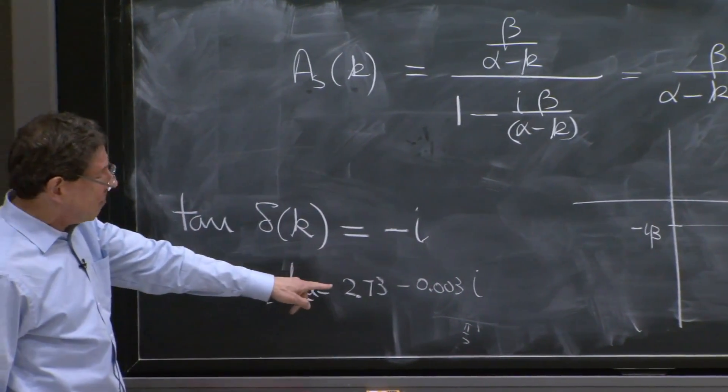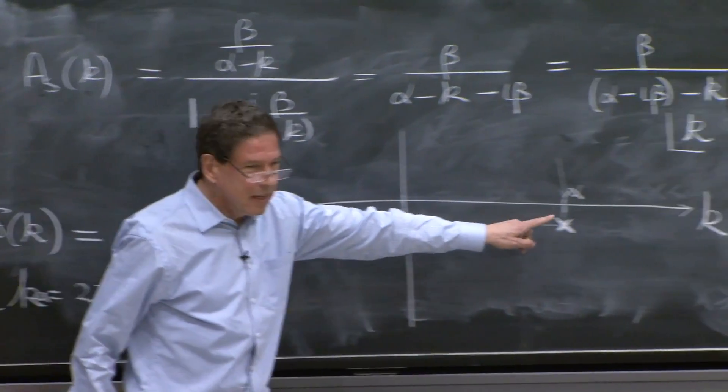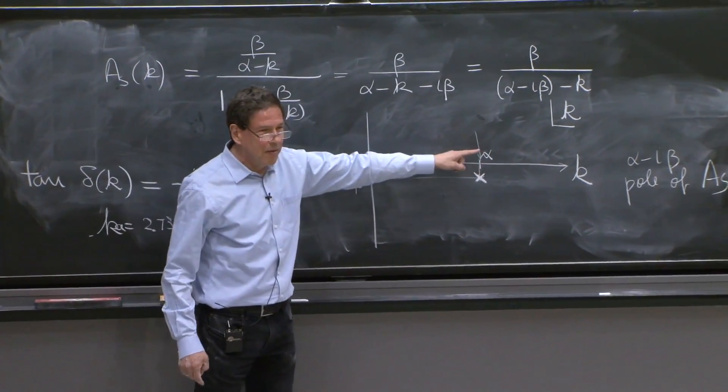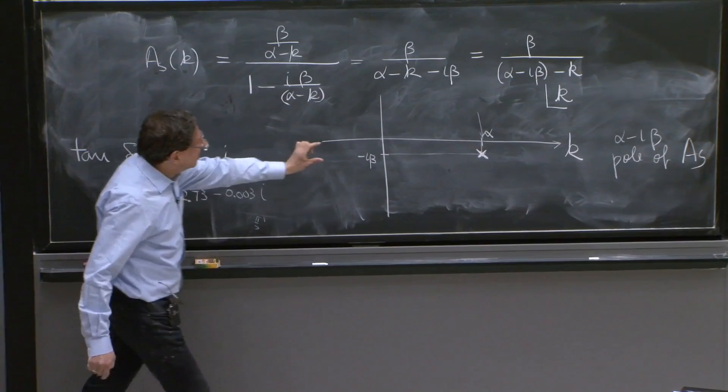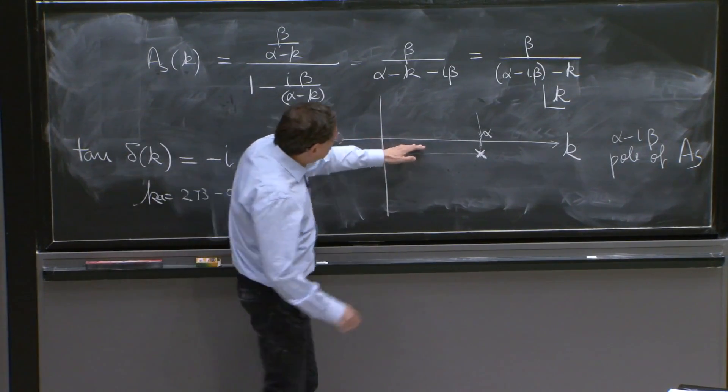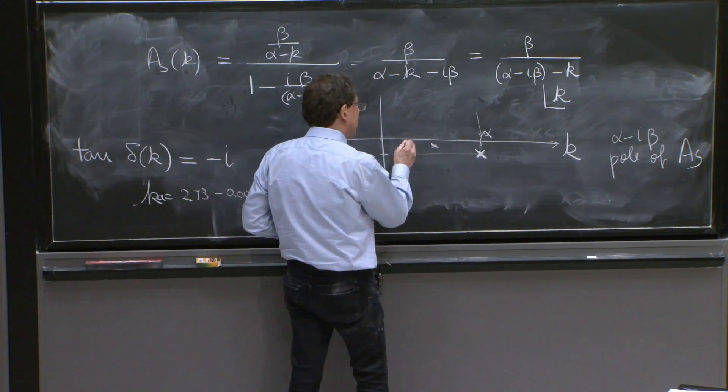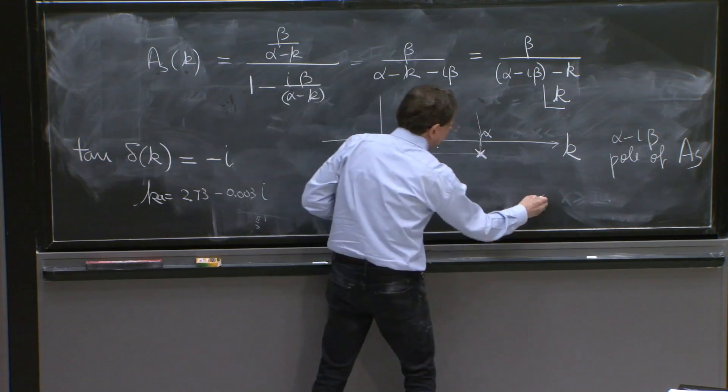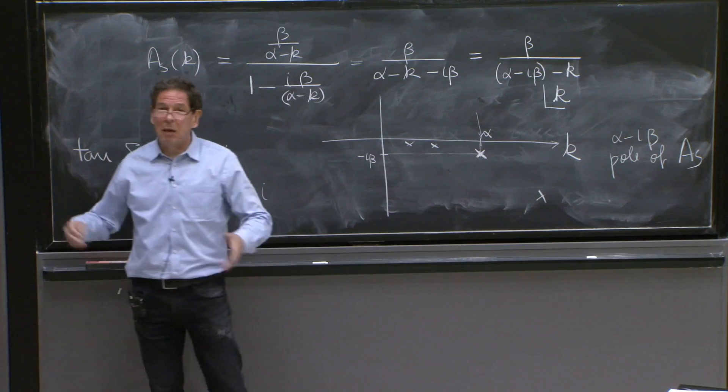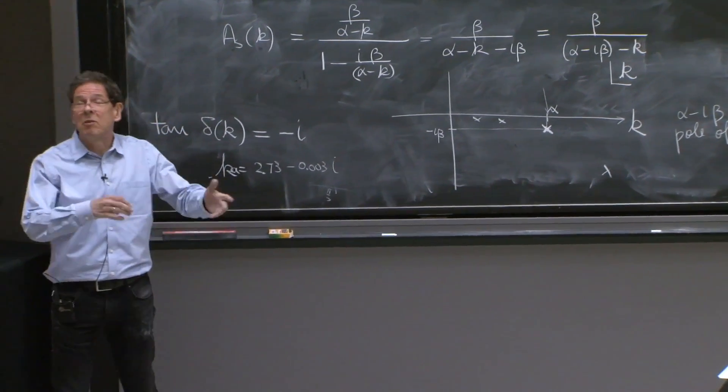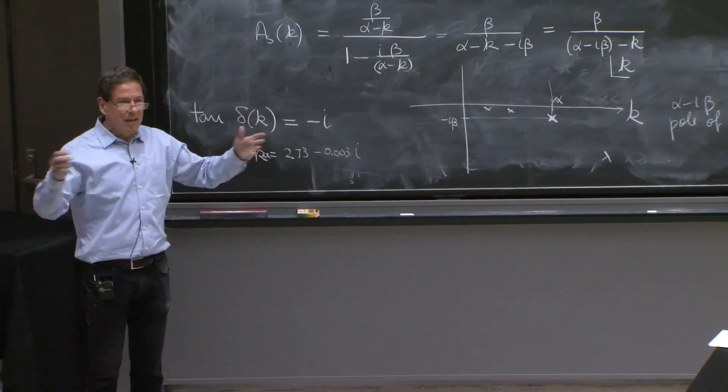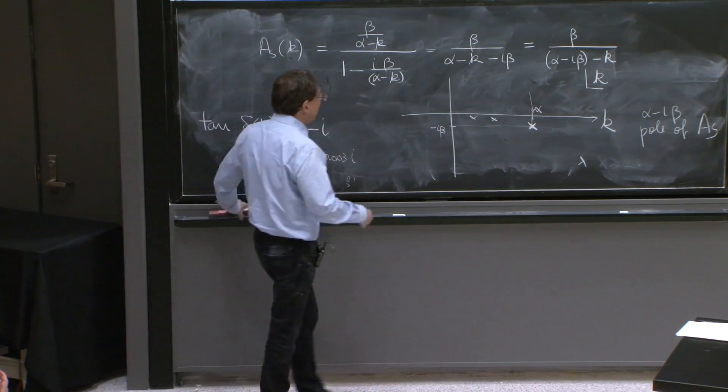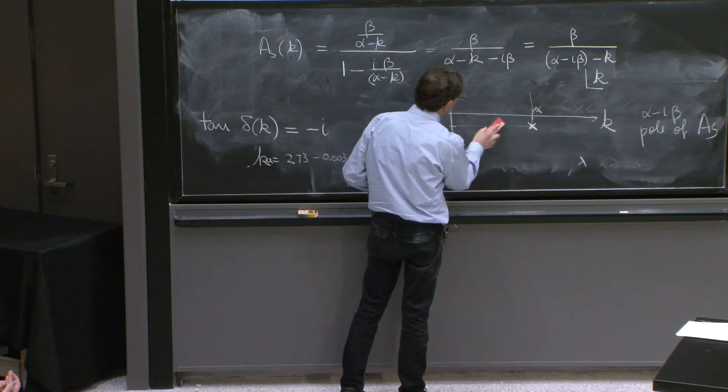k equal or ka equal 2.73 minus 0.003 i. And you will know, oh, that's a resonance. It's off the axis. And the real part is the value of alpha. And since this is beta, the closer to the axis, if you find more, the more resonant it is. And by the time it's far from the axis, some people call it a resonance. And people say, no, that's not a resonance. It's a matter of taste. But there are important things, which are these poles.